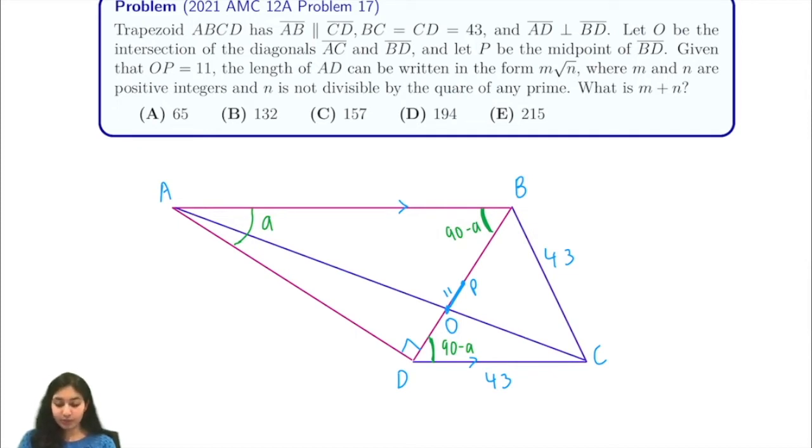Now we'll see that BDC is an isosceles triangle. And because P is the midpoint, if we draw our altitude, it's actually just going to be a perpendicular bisector by definition. So these are also 90 degree angles.